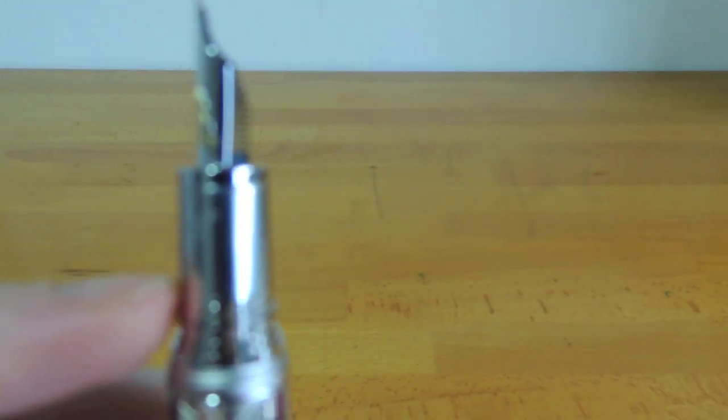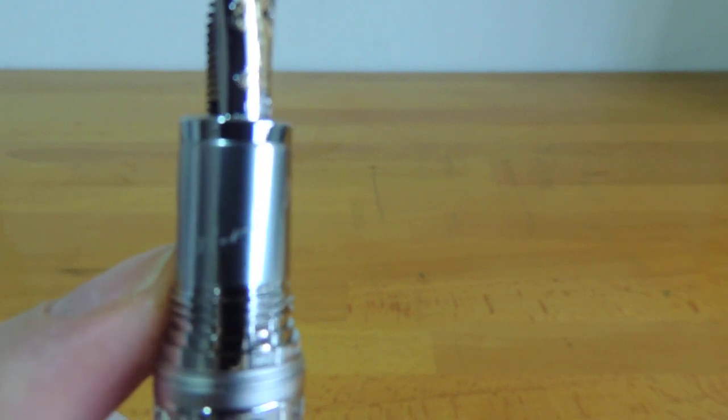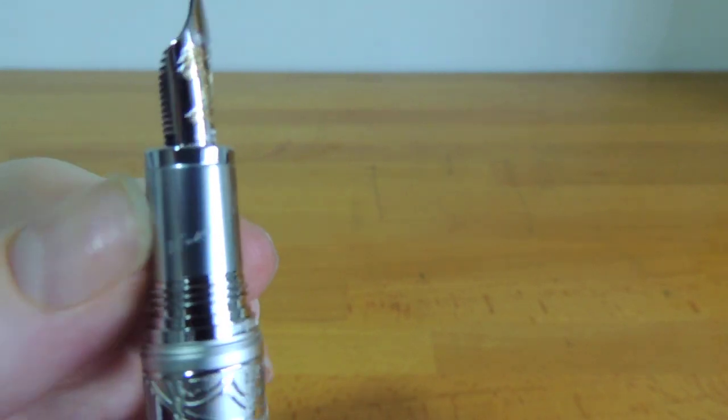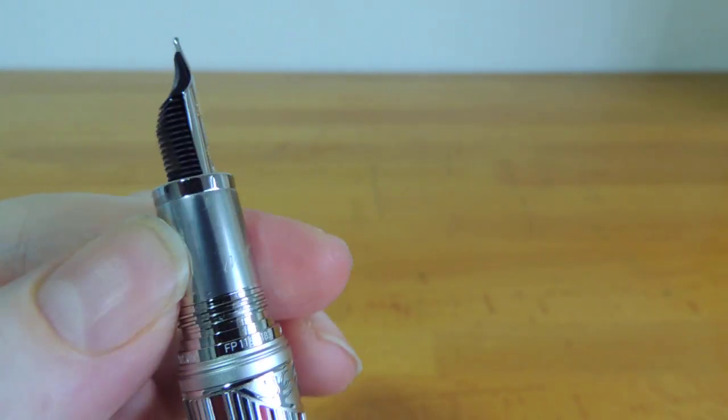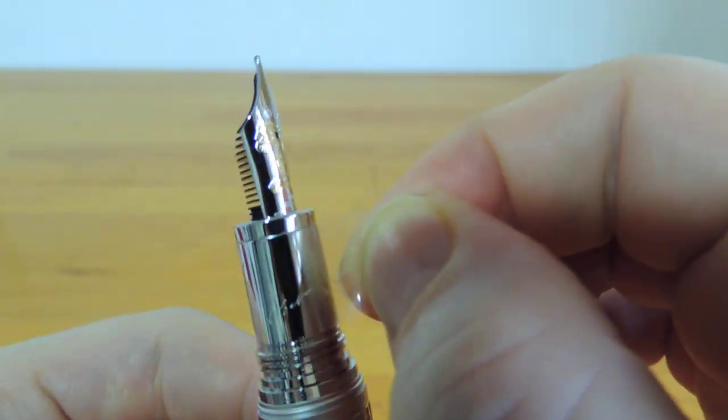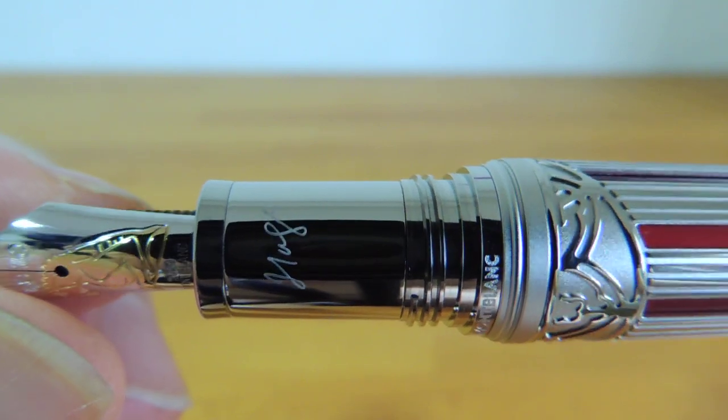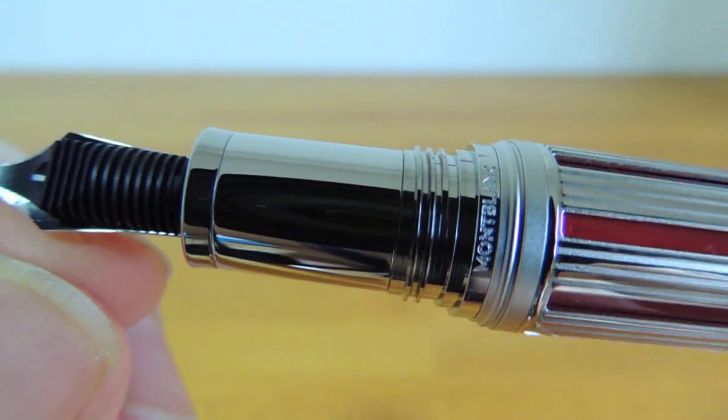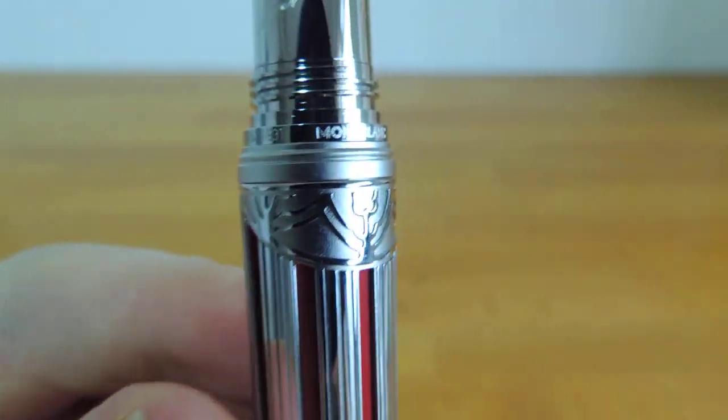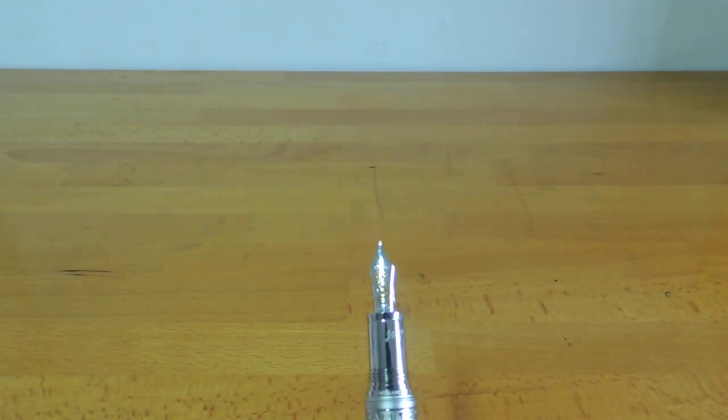And then, as with all writer's editions, somewhere on the pen they'll scribe the author's signature. This time it's on the section. And I think this is also a plastic sheet. Let's remove that. Very tenacious. Beautiful mirror finish. Sorry about the jets.